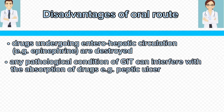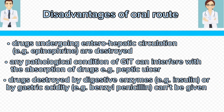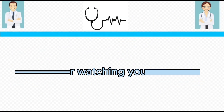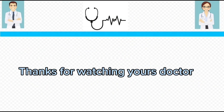Any pathological condition of the GIT can interfere with the absorption of drugs, for example in peptic ulcer. Drugs destroyed by digestive enzymes, like insulin, or by gastric acidity, like benzyl penicillin, cannot be given by this route.